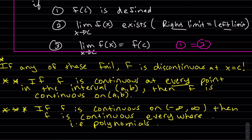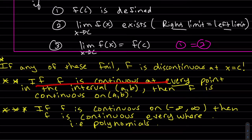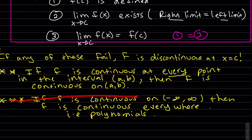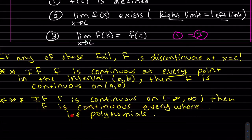Just a couple of points: if any of these conditions fail, then f is discontinuous at the point c. If f is continuous at every single point in the interval, then f is considered continuous on the interval a b. If f is continuous everywhere from minus infinity to infinity, then f is continuous everywhere — for example, polynomials.